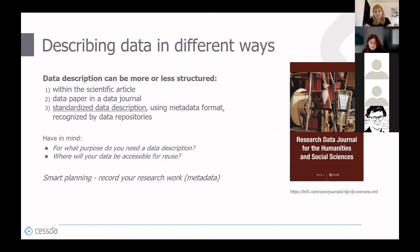Another topic is how to describe datasets to make them understandable. Data description can be more or less structured. One option is a description within the article, but focus there is usually on the knowledge rather than the data itself. You can publish in a data journal, which gives more space to describe your dataset. However, the most proper way is to use a standardized metadata format recognized by a data repository, so your description is attached to your dataset, included in a data catalog, and findable to those who haven't read the article.